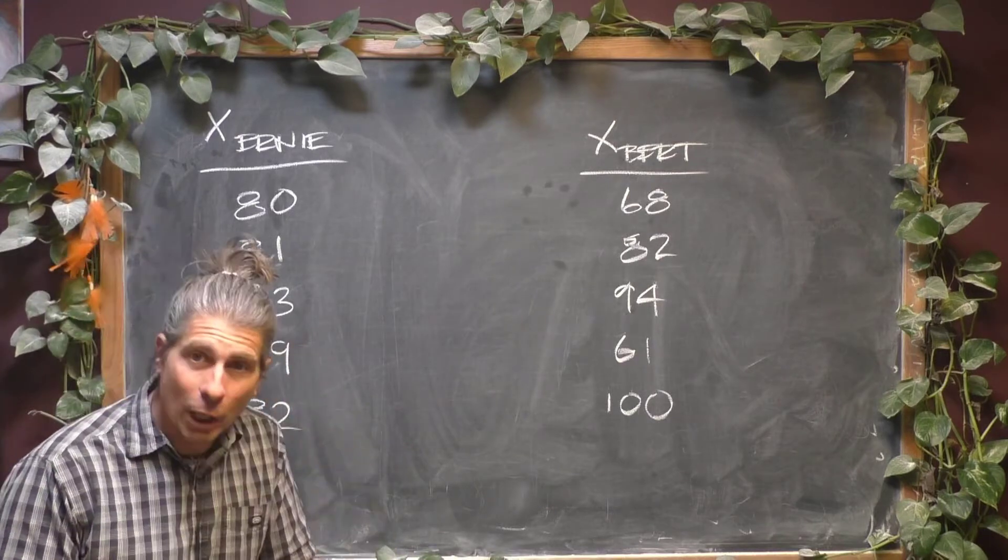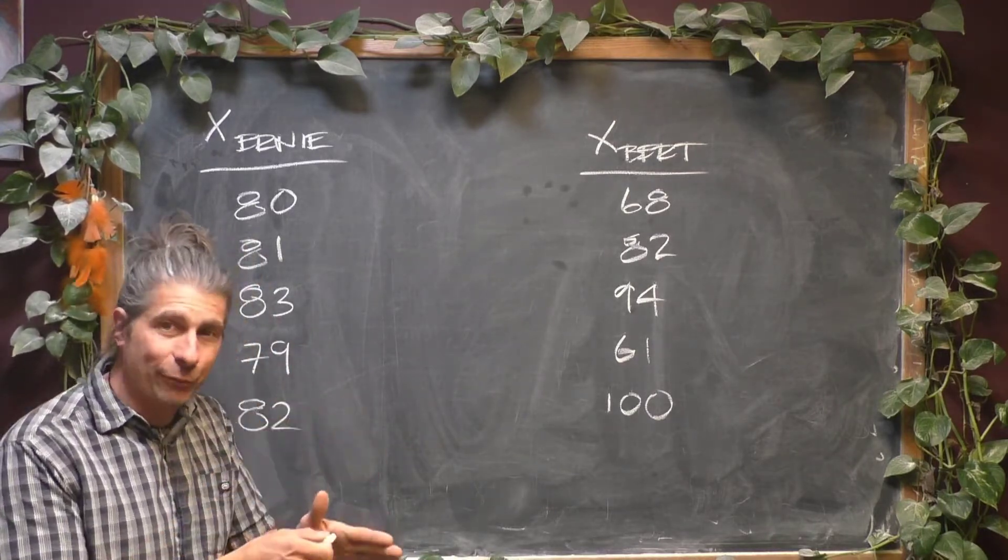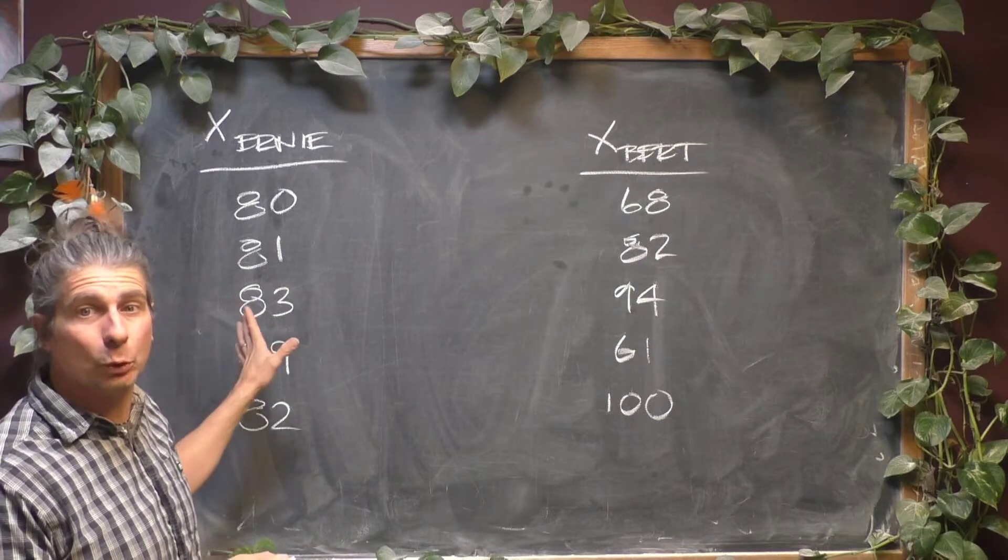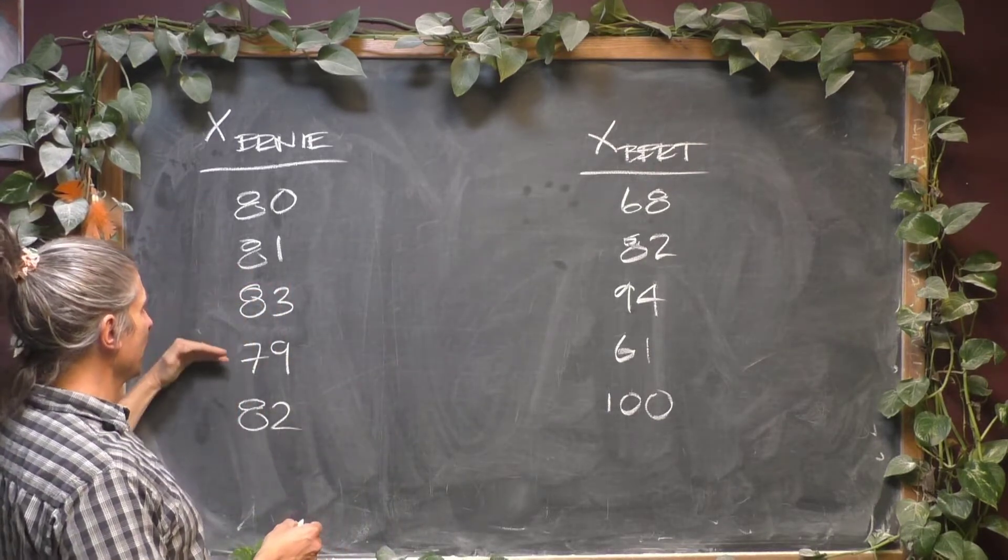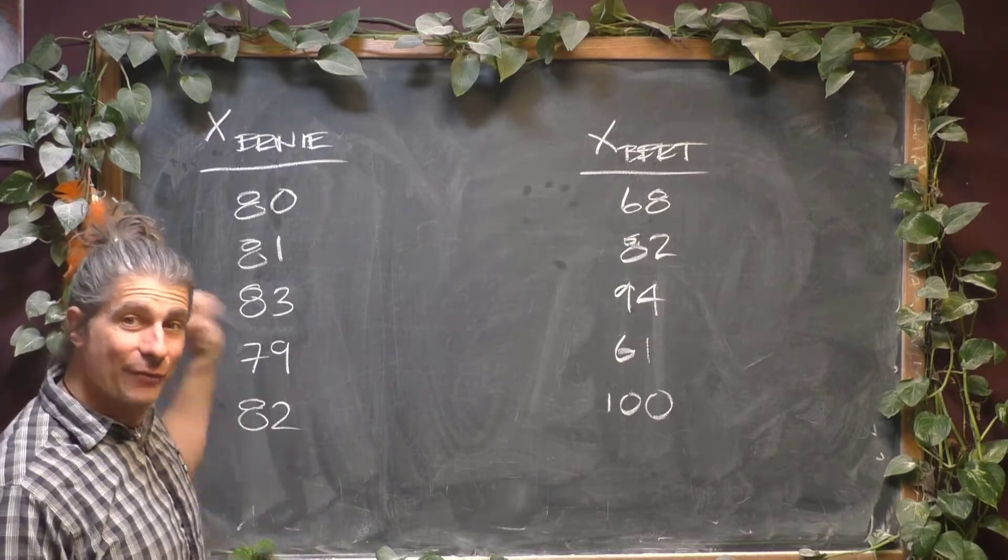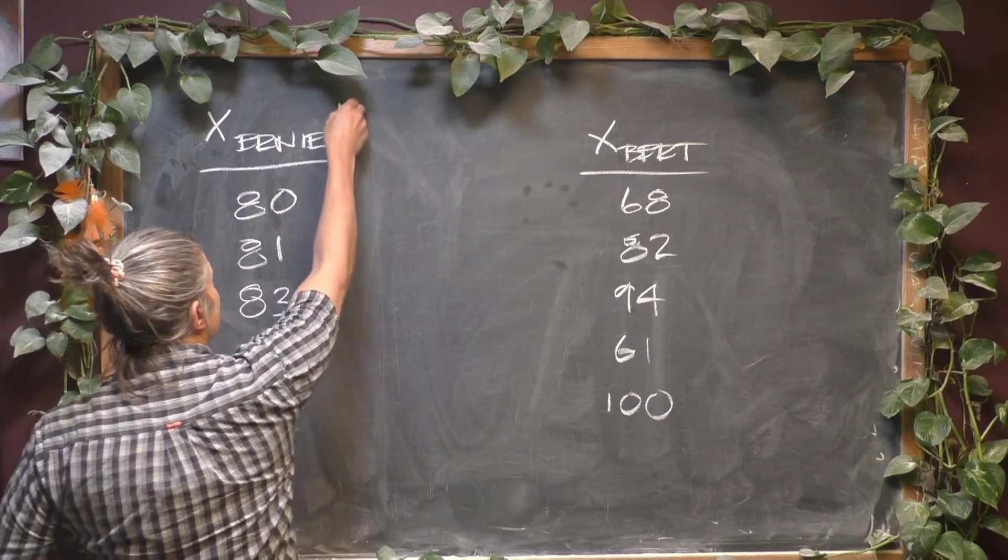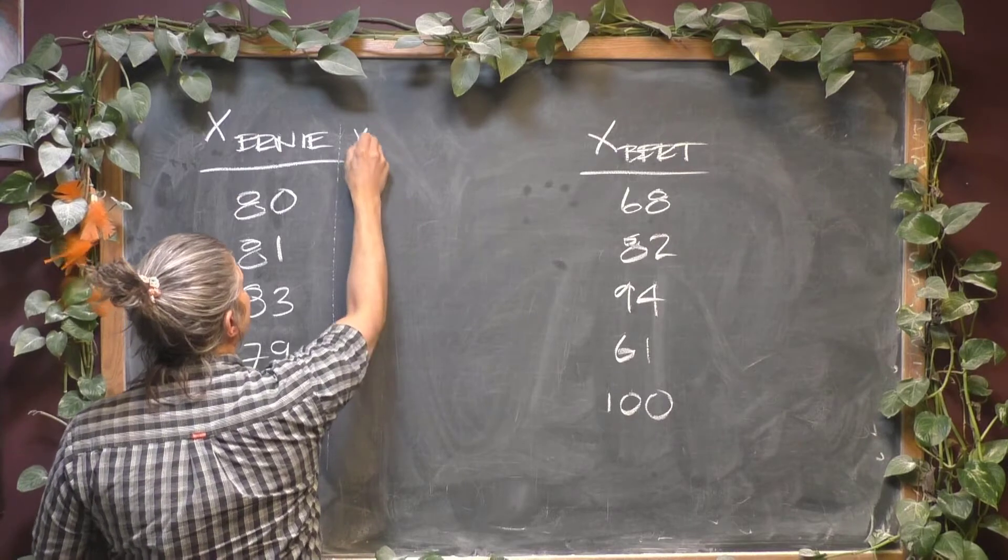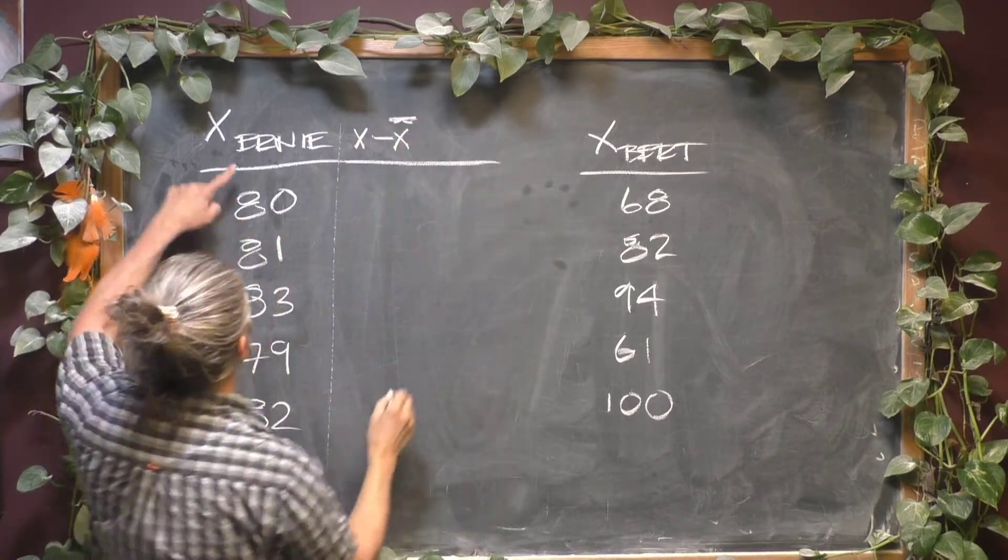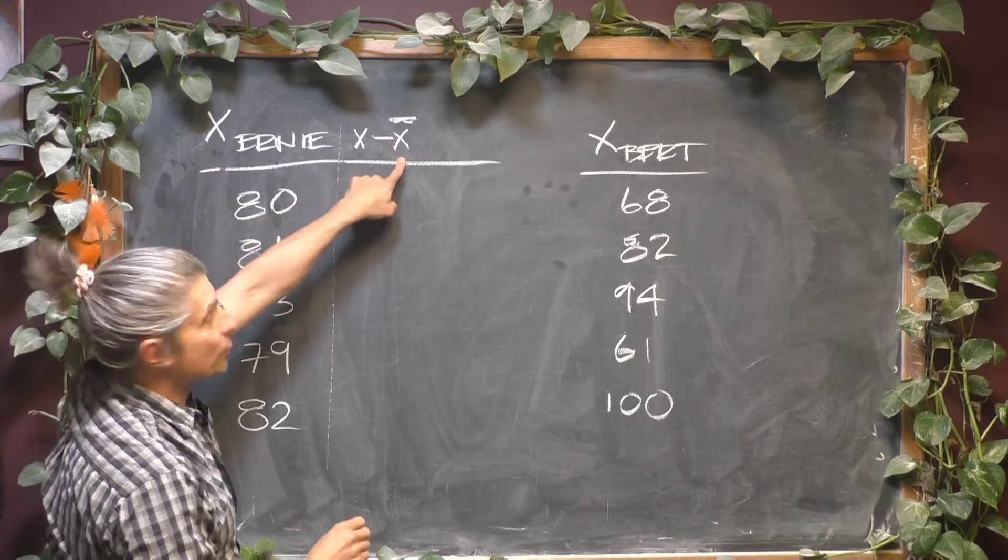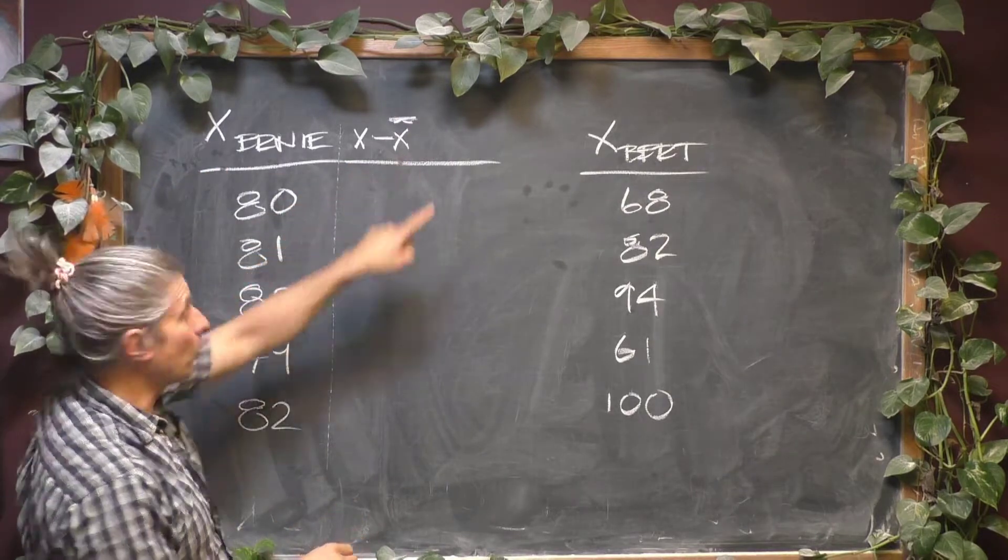So let's start by looking at how different Ernie's test scores are from the average. We're going to look at each test score and take the difference of that score and the average. So I'm going to make a little column right here called X minus X bar. And what that is is we're going to take each of Ernie's test scores and subtract the average of 81.